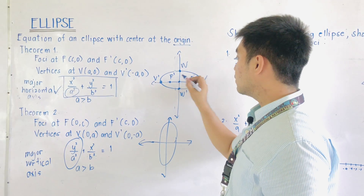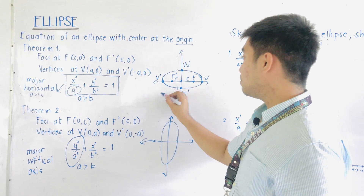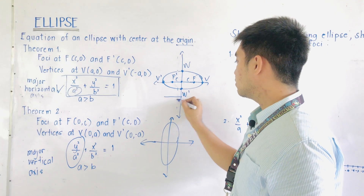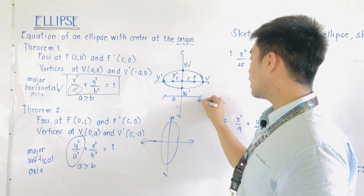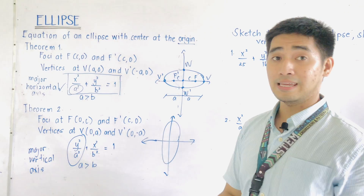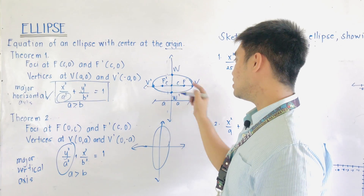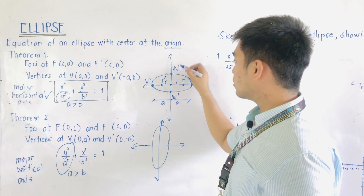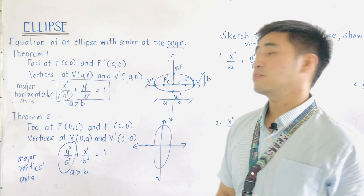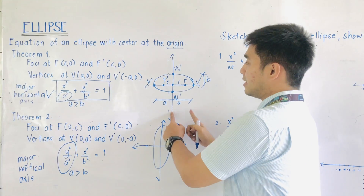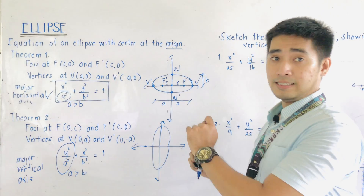For F, the distance from center is called C. From the center to a vertex V or V prime, the distance is A. From the center to the co-vertices, the distance is B. This horizontal span is the major axis, and the vertical span is the minor axis.